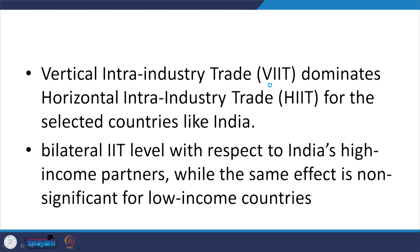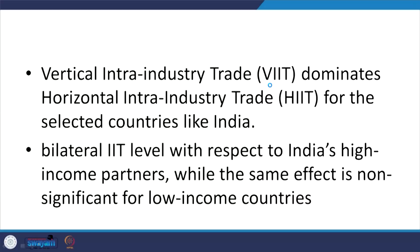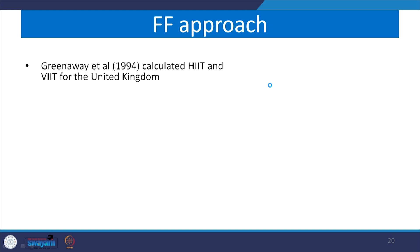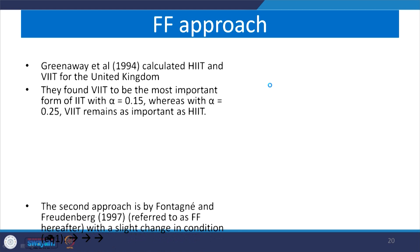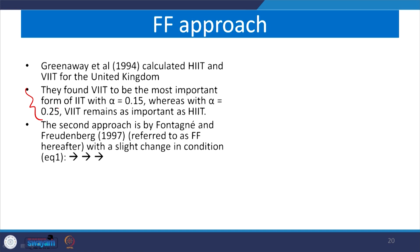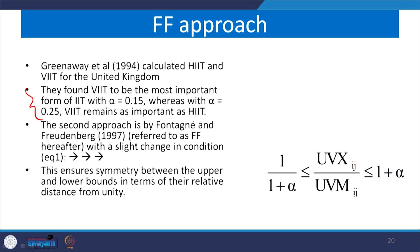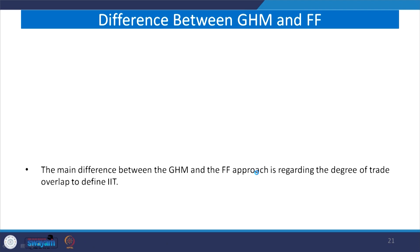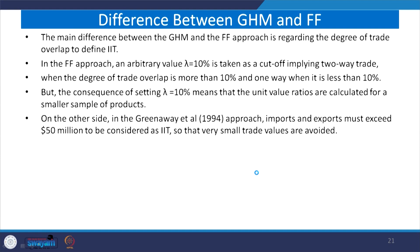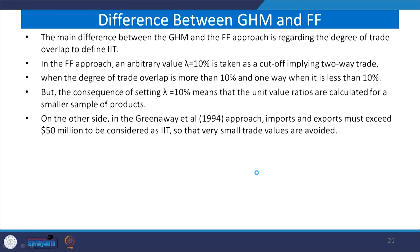Bilateral IIT levels with respect to India's high-income partners show a significant effect, while the same effect is non-significant for low-income countries. The vertical IIT dominance is significant for selected countries like India in present-day trade. Greenway in a 1994 paper calculated HIIT especially for the UK context, similarly finding alpha significant at 0.15. Follow the PPTs to find out the differences in their equation, which has a slight change with 1 plus alpha in the denominator.